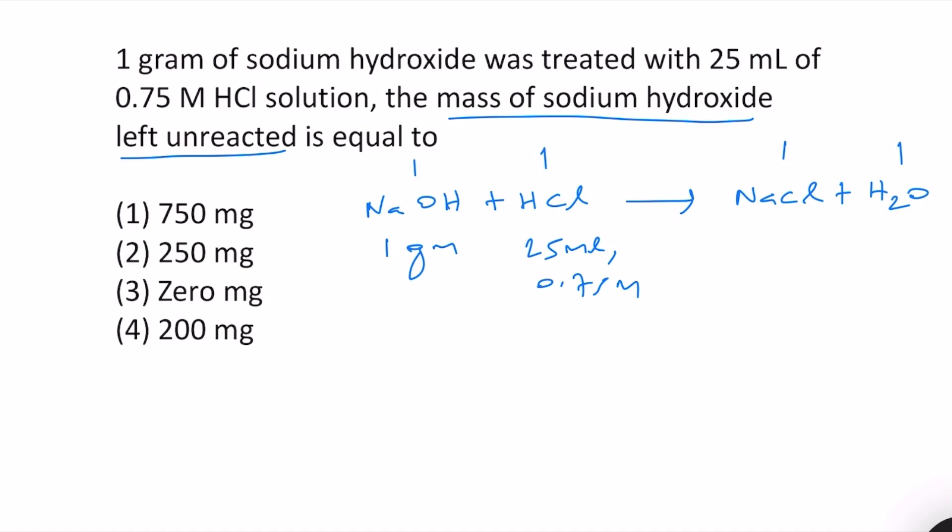We know that number of moles equals mass divided by molar mass. So molar mass of NaOH is equal to 40 and this means 1 by 40, and that means n value here is 0.025 moles.